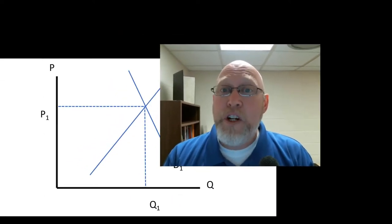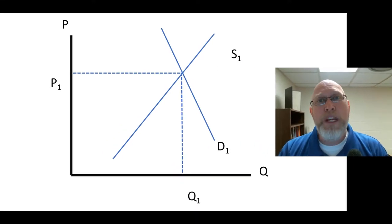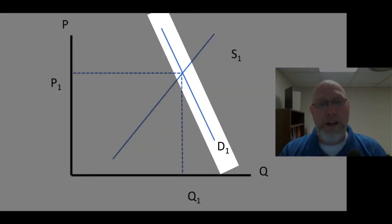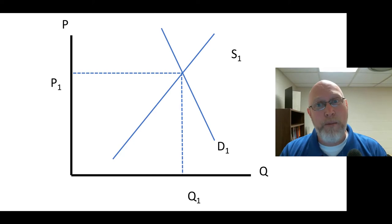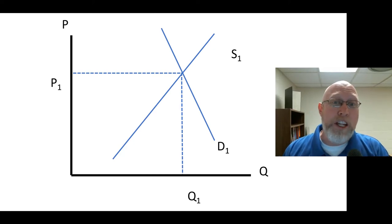Here in front of us we have the standard model that we use to analyze things in economics. It's a market diagram. We've got an upward sloping supply curve, a downward sloping demand curve, a price and quantity in equilibrium, and everything's labeled with a one, and that one is a time stamp.